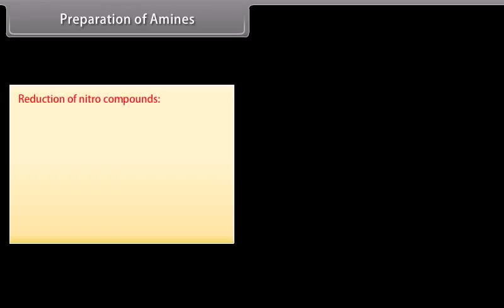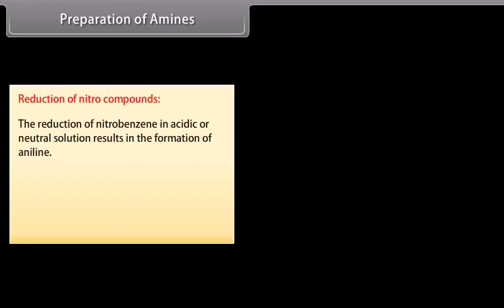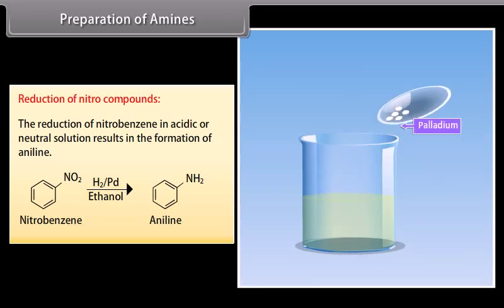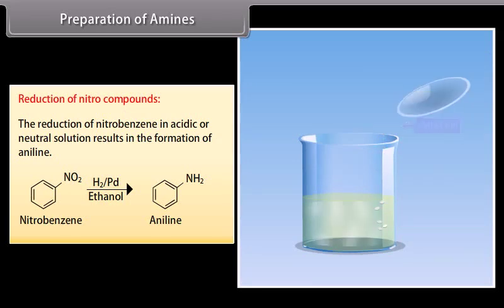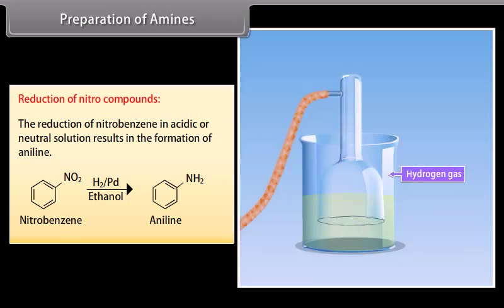Preparation of amines — Reduction of nitro compounds: The reduction of nitrobenzene in acidic or neutral solution results in the formation of aniline. Nitrobenzene is reduced to aniline by passing hydrogen gas in the presence of finely divided palladium.